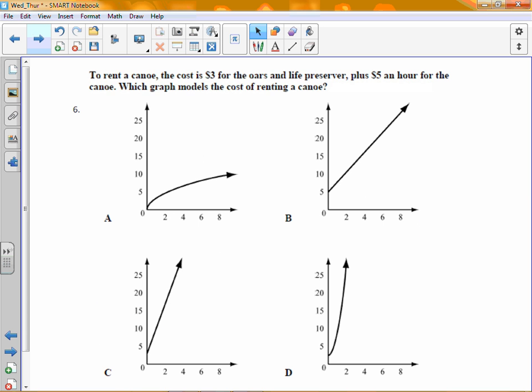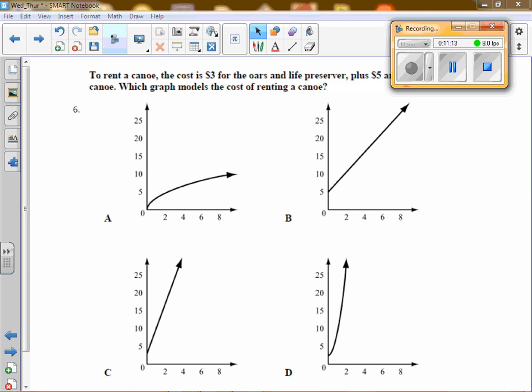To rent a canoe, guys, not done. To rent a canoe is $3 for the oars and life vest plus $5 an hour. So if you rent one hour, how much is the total? Eight. If you rent two hours, how much is the total? Thirteen. Thirteen. Three hours, eighteen.